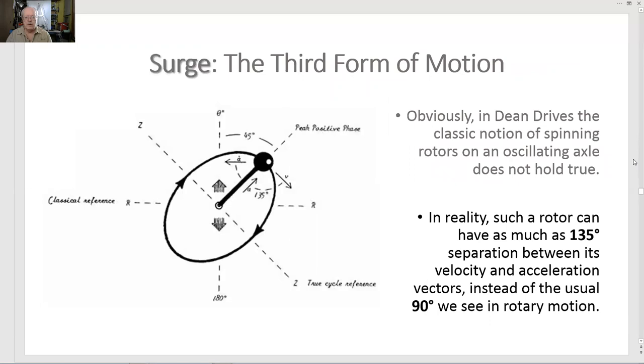Surge, a third form of motion. Obviously, in dean drives, the classic notion of spinning rotors on an oscillating axle does not hold true. In reality, such a rotor can have as much as a 135-degree separation between its velocity and acceleration vectors instead of the usual 90 degrees we see in rotary motion.